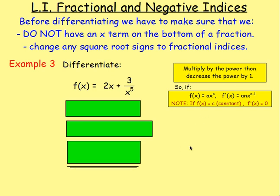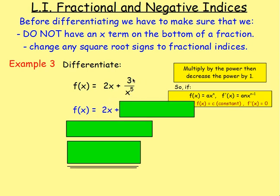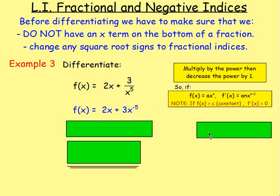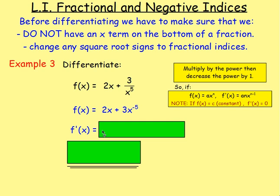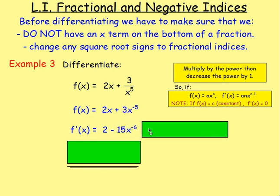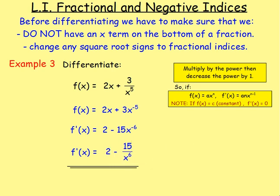Example number 3: f(x) = 2x + 3 over x to the power of 5. You cannot differentiate it straight away because x is on the bottom of a fraction. So keep it as f(x) and rewrite: 2x stays as it is, but 3 over x to the power of 5 becomes 3x to the power of negative 5. After that, you can differentiate: f'(x) — differentiating 2x gives 2; multiplying 3 by negative 5 gives negative 15, and taking 1 off the power gives x to the power of negative 6. If asked for a positive index: 2 minus 15 over x to the power of 6.